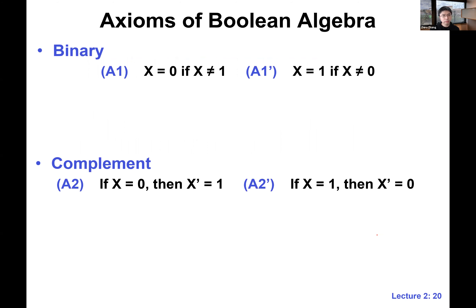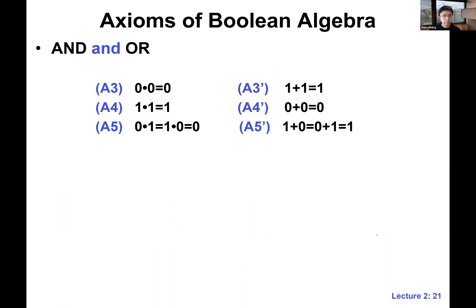The first axiom says: if x is zero, then x cannot be one. So basically a binary variable can only be zero or one. The second axiom says: if x is zero, then x-not is one. So this is the definition of the NOT operation.